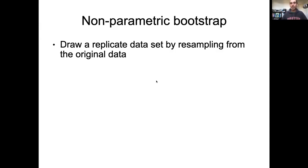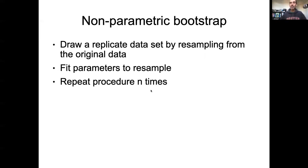We need to draw replicate data sets by resampling the original data. First step: draw a replicate sample of the data by resampling the original data. Next, we fit our parameters to that resample using whatever method we use to fit our model, such as maximum likelihood, to get an estimate of the best fit parameters.